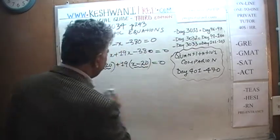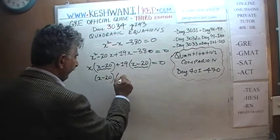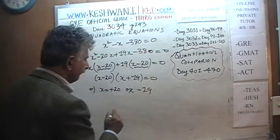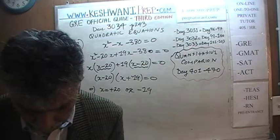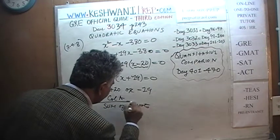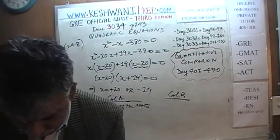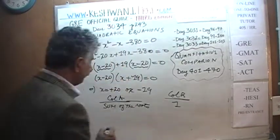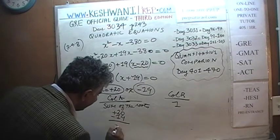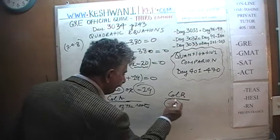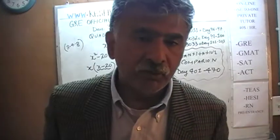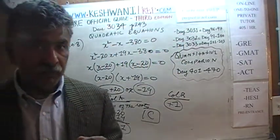Taking out x − 20 as the common factor, we get (x − 20)(x + 19) = 0, which implies x = positive 20 or x = negative 19. The question asked us to compare in column A the sum of the roots versus column B which was 1. The first root is positive 20, the second root is negative 19, and their sum is positive 1. Column B also has positive 1. The answer is C — these two quantities are equal.